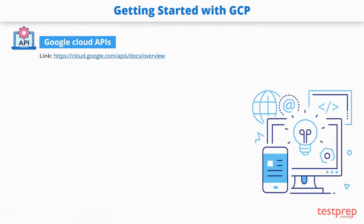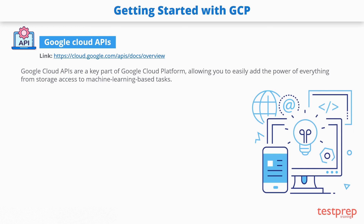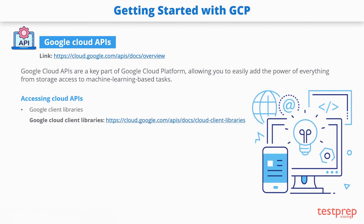Google Cloud APIs are a key part of Google Cloud Platform, allowing you to easily add the power of everything from storage access to machine learning-based tasks. You can access Cloud APIs from server applications with Google client libraries in a wide variety of popular programming languages, and from mobile apps via the Firebase SDKs, or by using third-party clients. You can also access the same services via Google SDK command line tools or Google Cloud console.